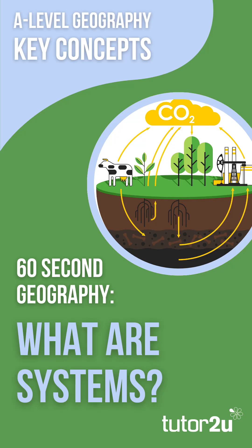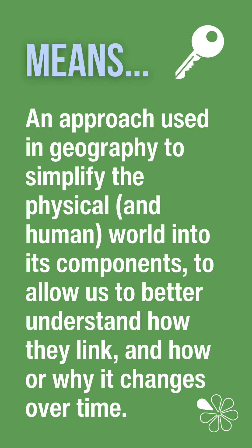Welcome to the 60-second Geography Short on Systems, a key concept to A-Level Geography. A systems approach is used in geography to simplify the physical and human world into interconnected and interdependent components, which enable us to see how they link and why they change over time.